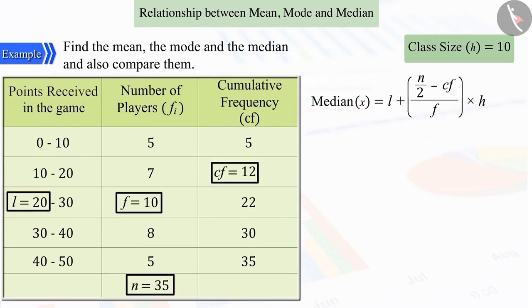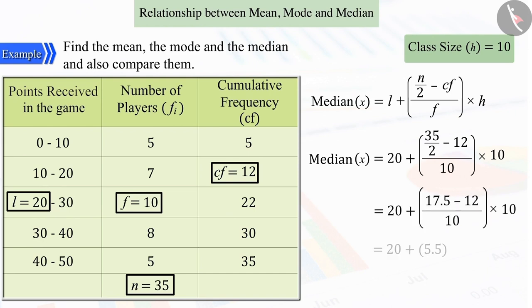Where, substituting all the values in the formula for the median and solving, we get the median value as 25.50.